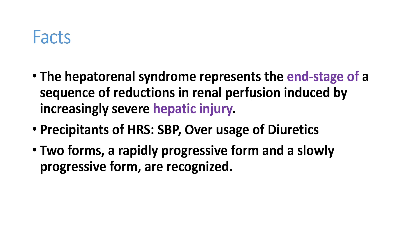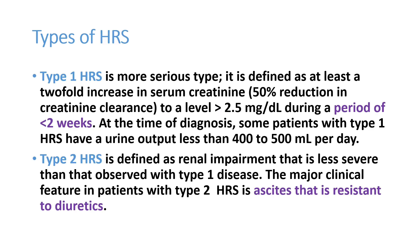There are two important forms of hepatorenal syndrome. Type 1 HRS is the more serious type, defined as at least a two-fold elevation in serum creatinine — meaning a 50% reduction in creatinine clearance to a level greater than 2.5 mg/dL within less than two weeks. It is rapidly progressive. Type 2 is less aggressive, and patients can have predominant ascites resistant to diuretic therapy.